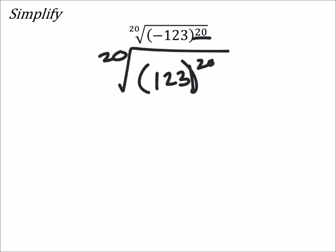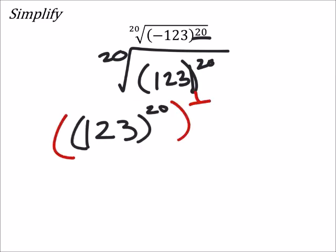Because it would have an even number of negatives. So, this is really the same as 123 to the power of 20. And then we're going to take that to the power of 1 20th.